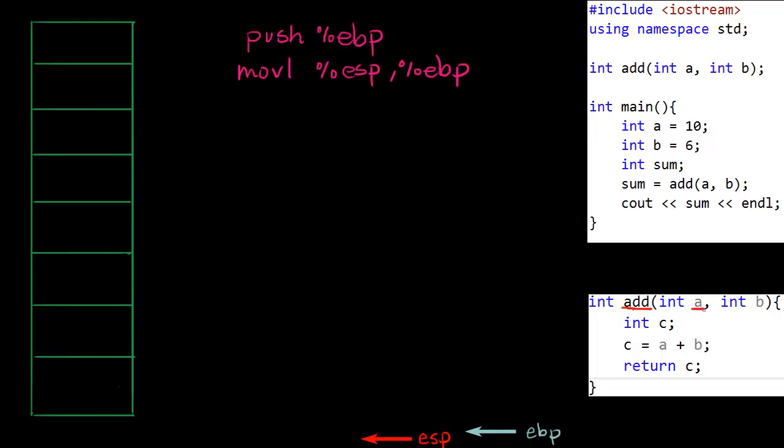It adds them together and returns their sum. So this is what add does here. But our main function is the one that actually calls it, which is up here, and add is called on this line here.